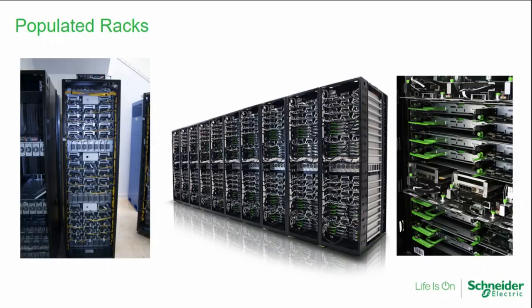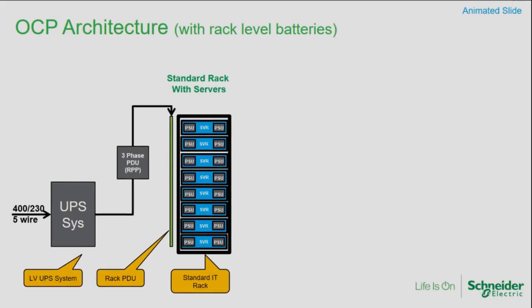Now I have another slide that shows a little bit more of what happens to the infrastructure just upstream of this rack. If you look at a traditional data center with a traditional rack, you're going to have a UPS system, a power distribution unit or PDU or RPP feeding a rack PDU or outlet strip in the rack, and then cords that go to each server which usually has two power supplies within it. Let me define these acronyms: PDU is power distribution unit and RPP is remote power panel, for those not familiar.